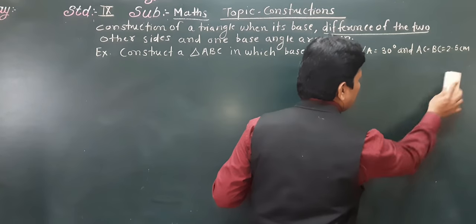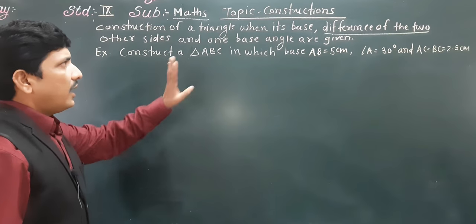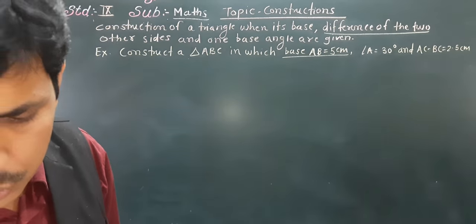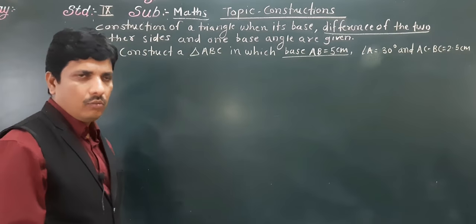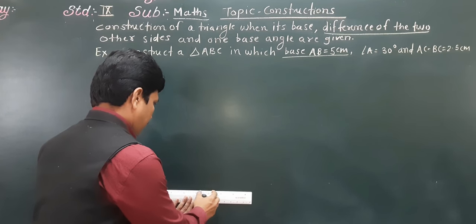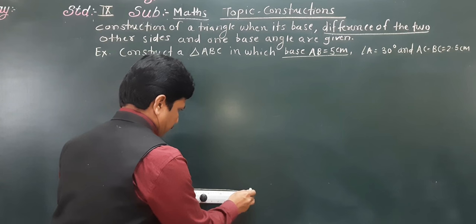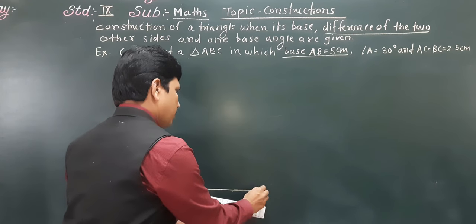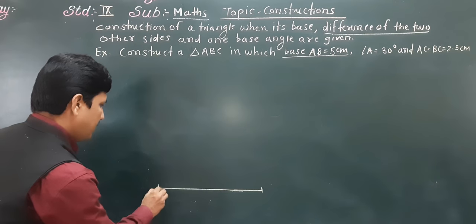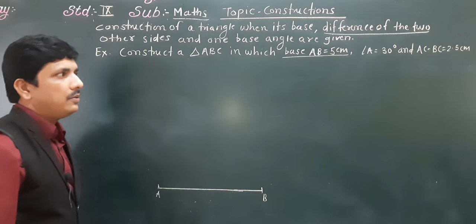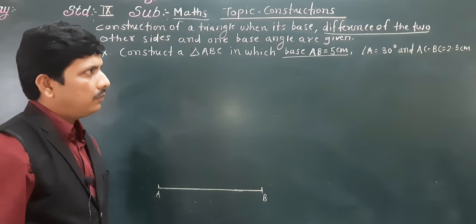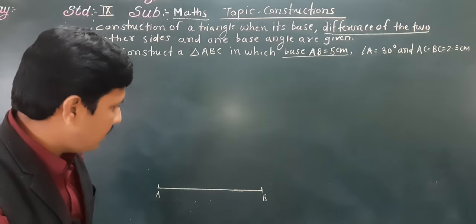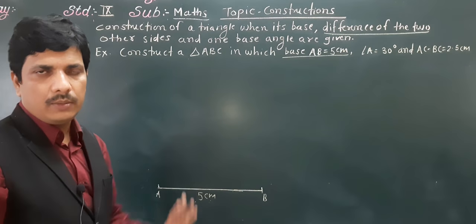So here, what is given — construct triangle ABC in which the base is 5 centimeters. So we need to take base AB equal to 5 centimeters. With the help of a ruler, take base 5 centimeters. Base AB is 5 centimeters as given, so we have taken that base accordingly.